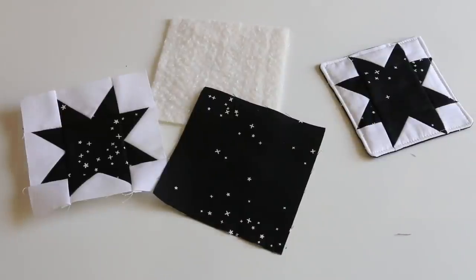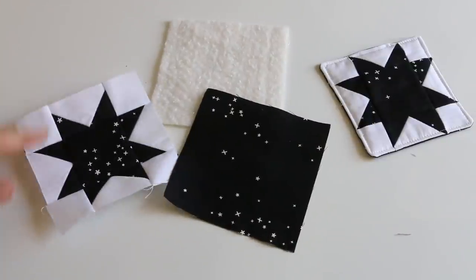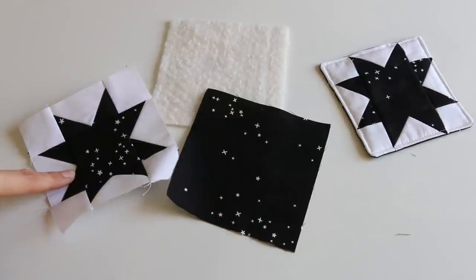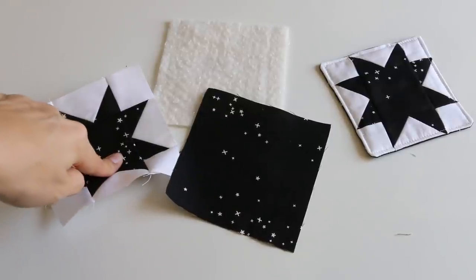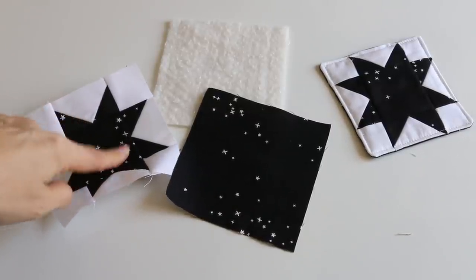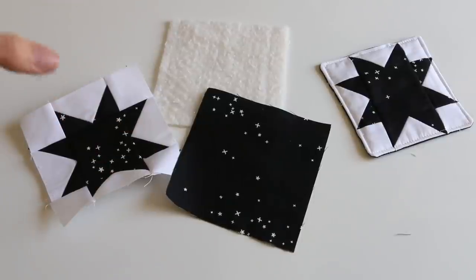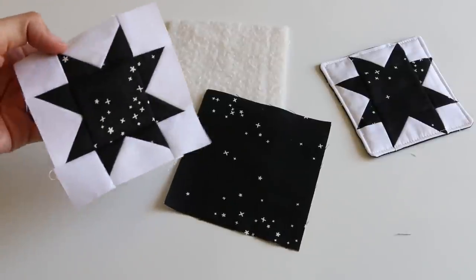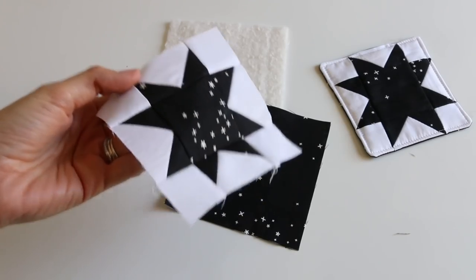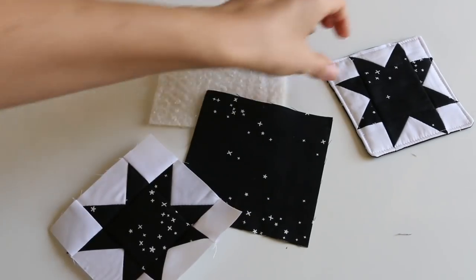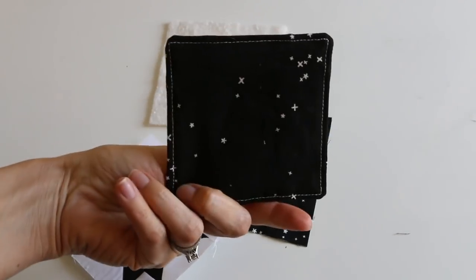All right, everyone, I've been crazy about these sawtooth stars lately and I had two of these four and a half inch ones that did not end up making it into a project. I made a mistake and I actually needed them to be a little bit larger. So I have two of these and I thought, well, how can I still use them, and I decided to make a coaster.